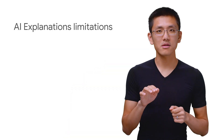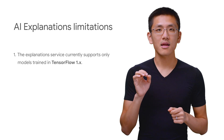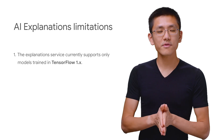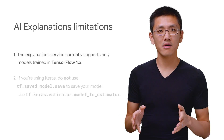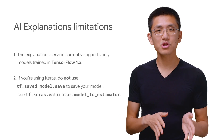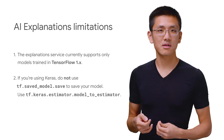Feature attributions are available for tabular data as well as image data and are specific to individual predictions. Currently, there is the limitation in AI Explanations that it only supports models trained on TensorFlow 1.x. And if you're using Keras to specify your model, you'll need to convert it into an estimator using the model to estimator utility.